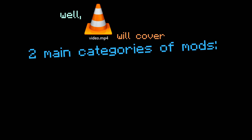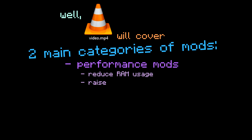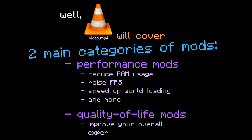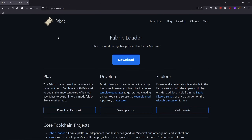So what are the mods and how can you install them? This video will cover two main categories of mods: performance mods, which reduce RAM usage, raise FPS, speed up world loading, and more; and quality of life mods, which improve your overall experience in the game with cool features and niceties. Now for the other question — how do you install the mods? Let's go over it.